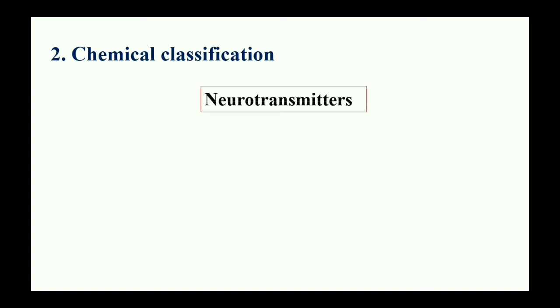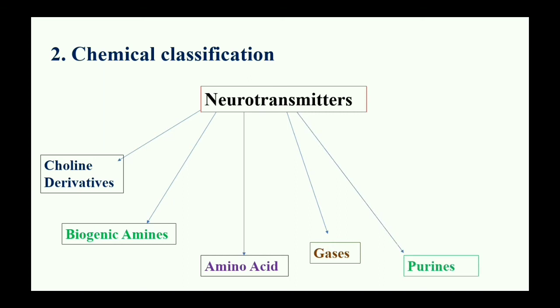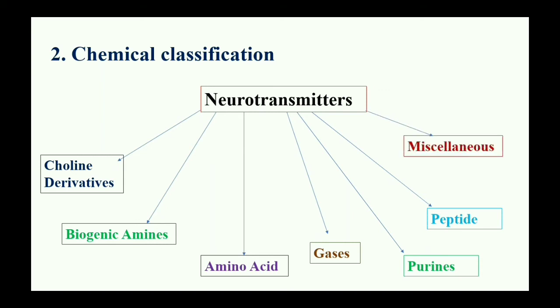Chemical classification — according to chemical classification, neurotransmitters are classified into seven types: choline derivatives, biogenic amines, amino acids, gases, purines, peptides, and lastly miscellaneous. These are the seven types of neurotransmitters classified according to chemical classification.